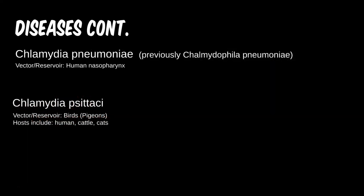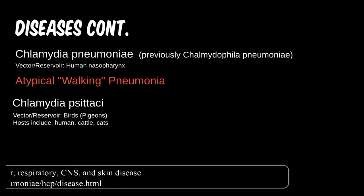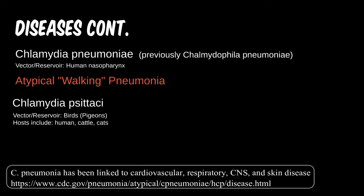Besides the genital and eye concerns of C. trachomatis, we also have our very last atypical pneumonia: C. pneumoniae. Like M. pneumoniae, C. pneumoniae can linger for several weeks with mild but persistent symptoms. It can cause infection throughout much of the upper respiratory tract, and severe symptoms can even include meningitis and myocarditis.